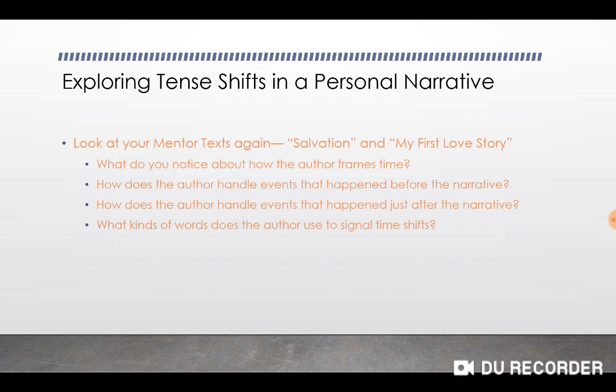I want you to look at Salvation and My First Love Story. You'll probably need to pause the presentation here. Look through the essays, reread them, and pay attention to how the author frames time. How do Langston Hughes and Evelyn Lauer frame time? Both of them talk about events that happened in the past, but Langston Hughes does deal with things that had happened before the event he's talking about. Evelyn Lauer gives a remembered event in past tense, but she switches around quite a bit — talking about events before, events after, present tense, and even future tense at one point. What words does the author use to signal time shifts?